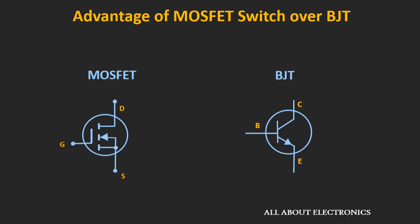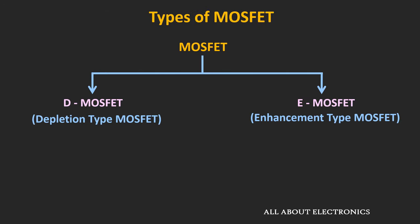In short, MOSFETs are easy to drive compared to BJTs and can work more efficiently at high switching frequencies. As we have seen in earlier videos, there are two types of MOSFETs: depletion type and enhancement type. But typically, enhancement type MOSFETs are used as a switch.